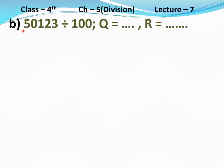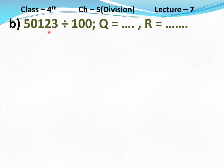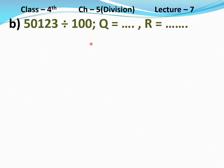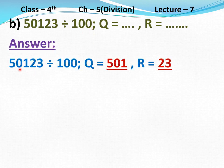Part B: 50,123 divided 100. The divisor is 100, so the last two digits — 2 and 3 — form the remainder 23. The remaining digits — 5, 0, 1 — form the quotient 501. Answer: Quotient equal to 501, Remainder equal to 23.